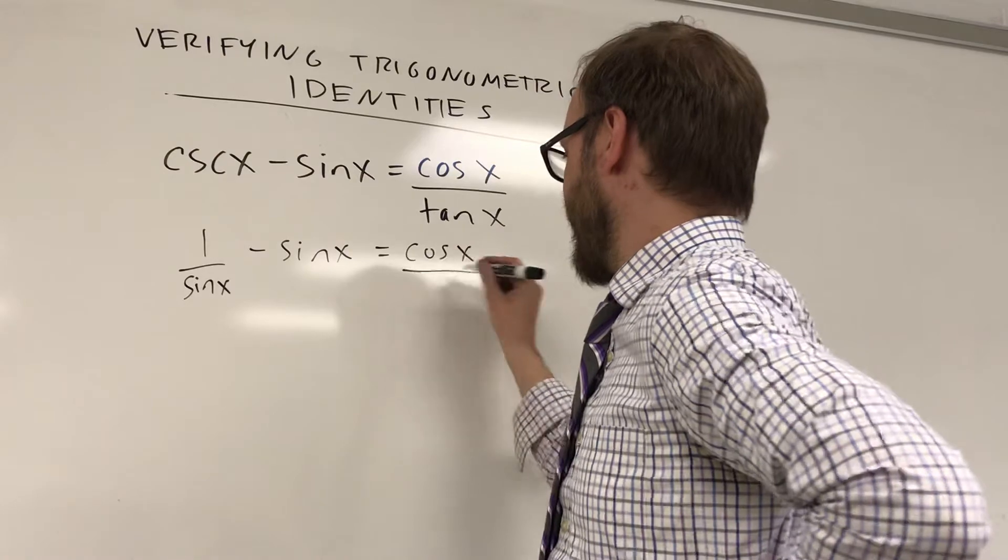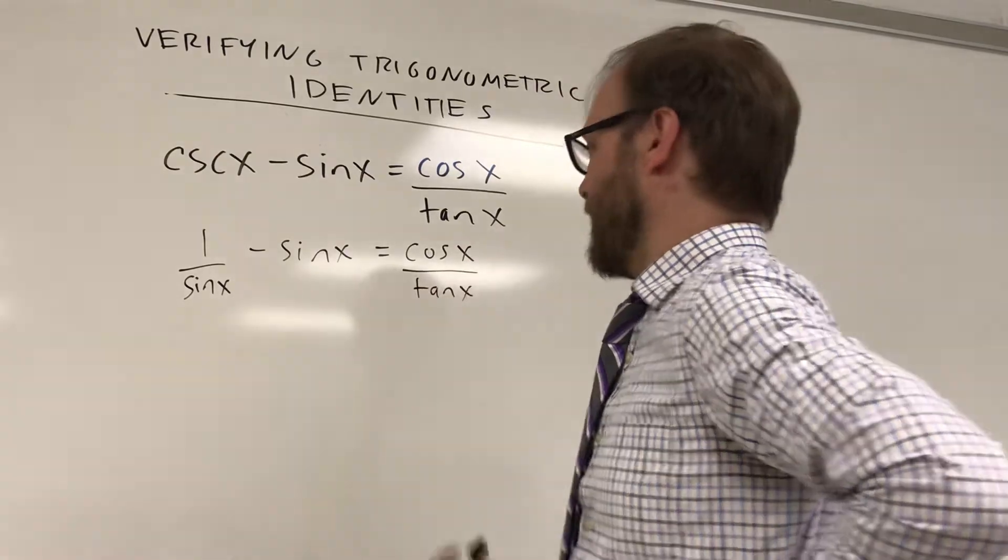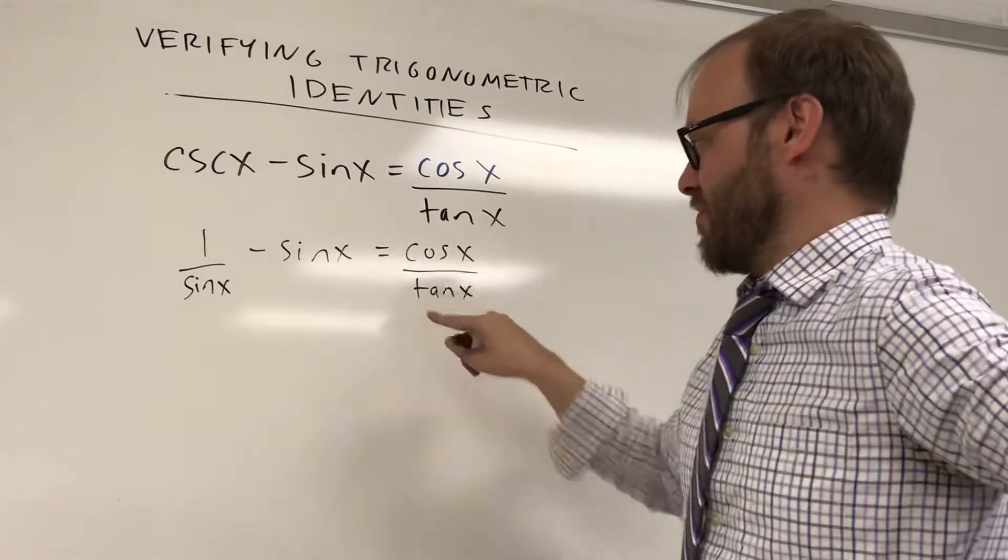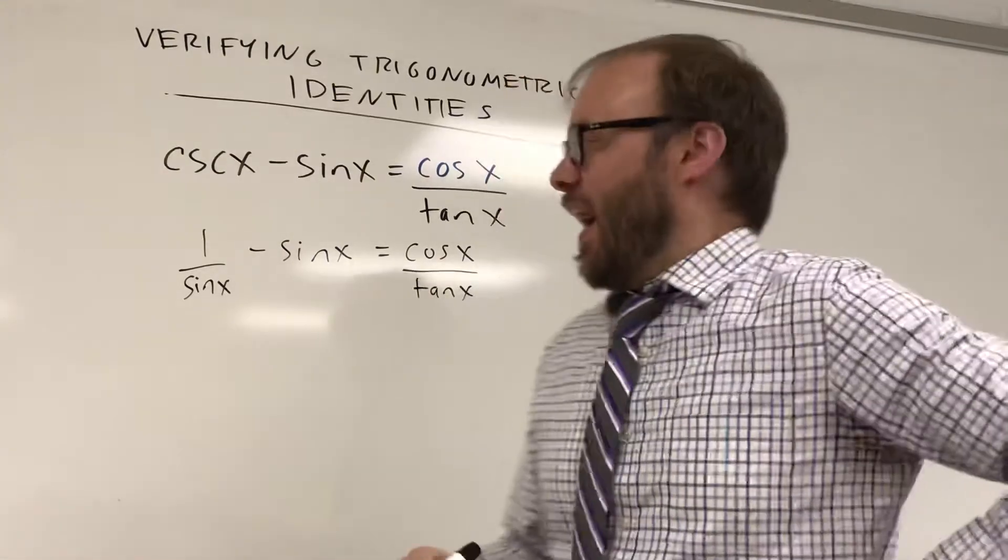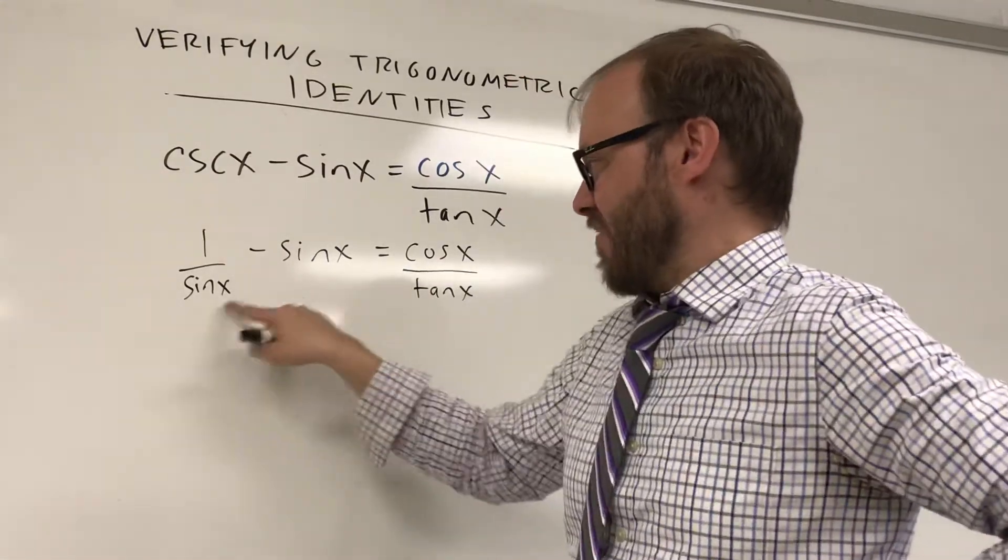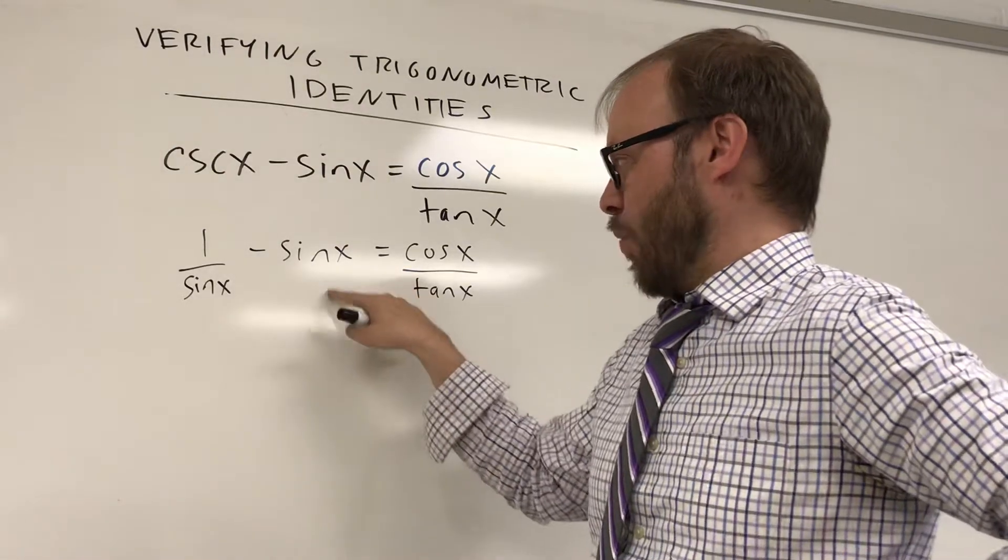In general you should be showing one step at a time, a true statement followed by another true statement. I would like to add these two fractions. I need a common denominator right now. This is sine of x over 1.